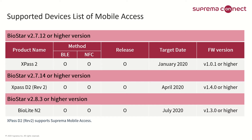Suprema Mobile Access allows you to use your smartphone as a key to access doors, facilities, and more. Using your smartphone as a credential, managing and using it as an access card, you will experience that it becomes much easier, faster, and safer. We are planning to expand our supportable devices to facilitate Suprema Mobile Access on all of Suprema's devices.